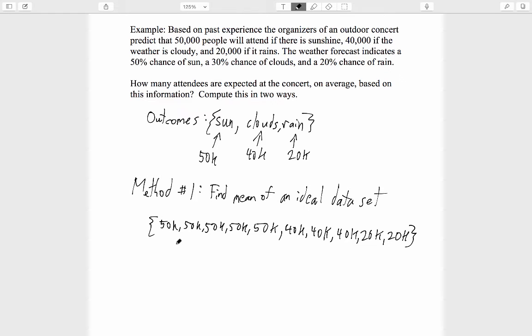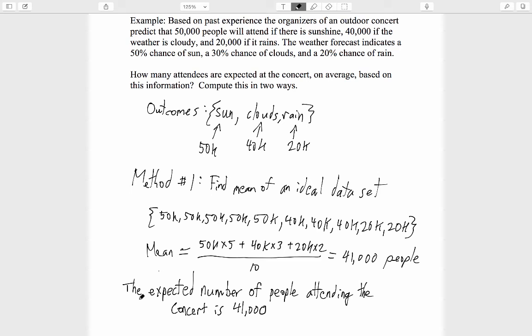Our expected number of participants is then the average of these ten numbers. The average, or the mean, equals 50,000 taken five times, plus 40,000 taken three times, plus 20,000 taken twice, all divided by the number of values that we're averaging over. That turns out to be 41,000 people. So on an average run of this experiment, 41,000 people will show up to the concert. Again, as in all our previous examples, this average value is not itself one of the possible values that could happen in one run of the experiment, but that's okay. It doesn't need to be.